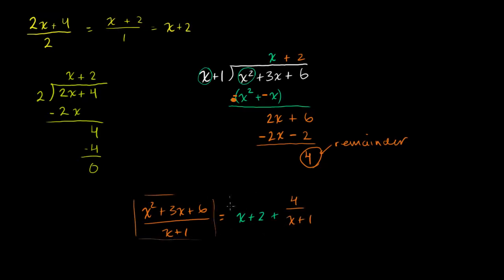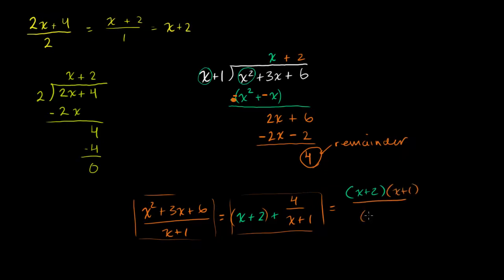This expression and the original fraction are equivalent. If you wanted to verify, you could multiply x plus 2 by x plus 1 over x plus 1 — that's multiplying by 1 — then add 4 over x plus 1, giving you the same common denominator. When you multiply those two binomials and add the 4, you should get x squared plus 3x plus 6. Let's do another one of these — they're kind of fun.